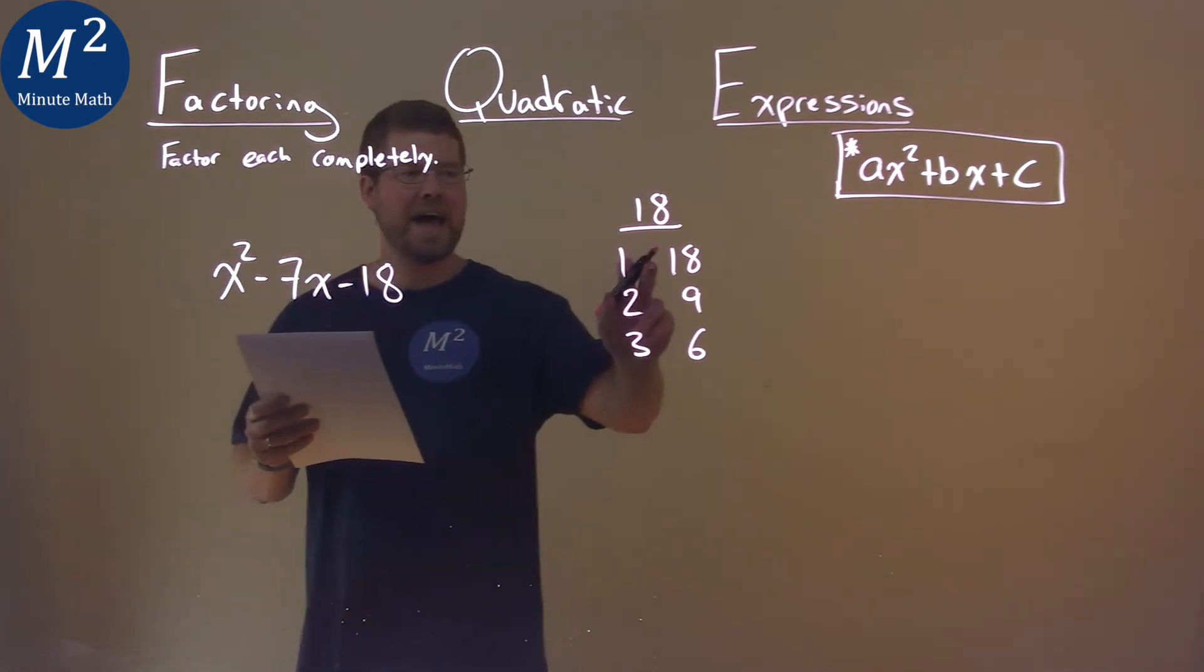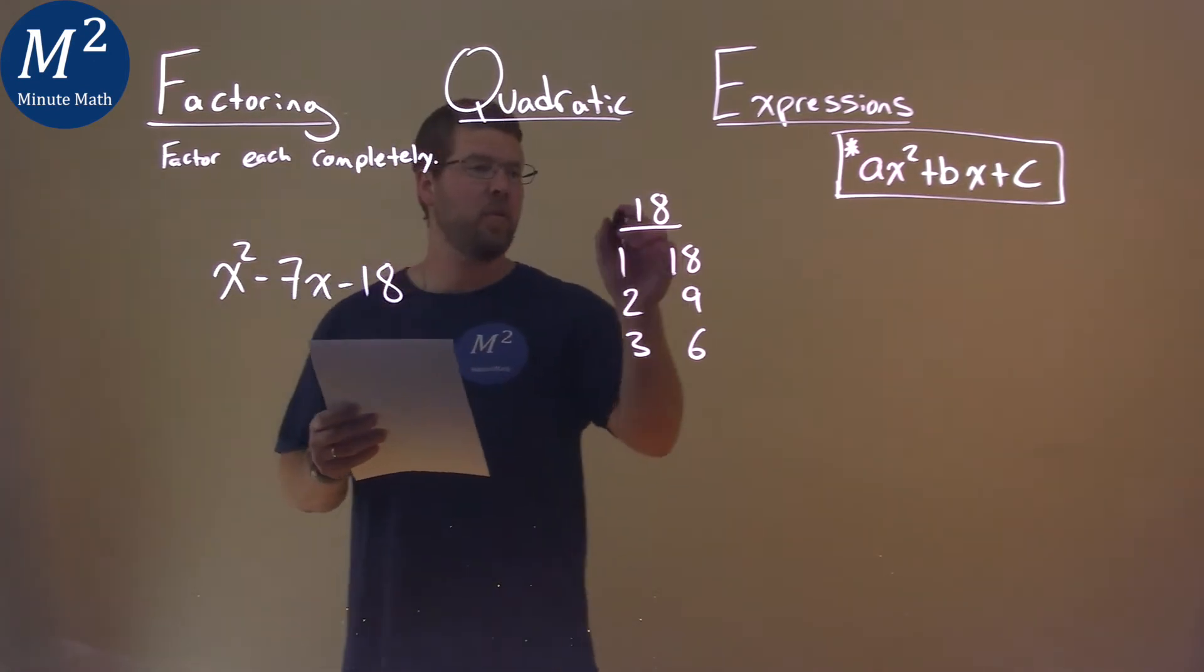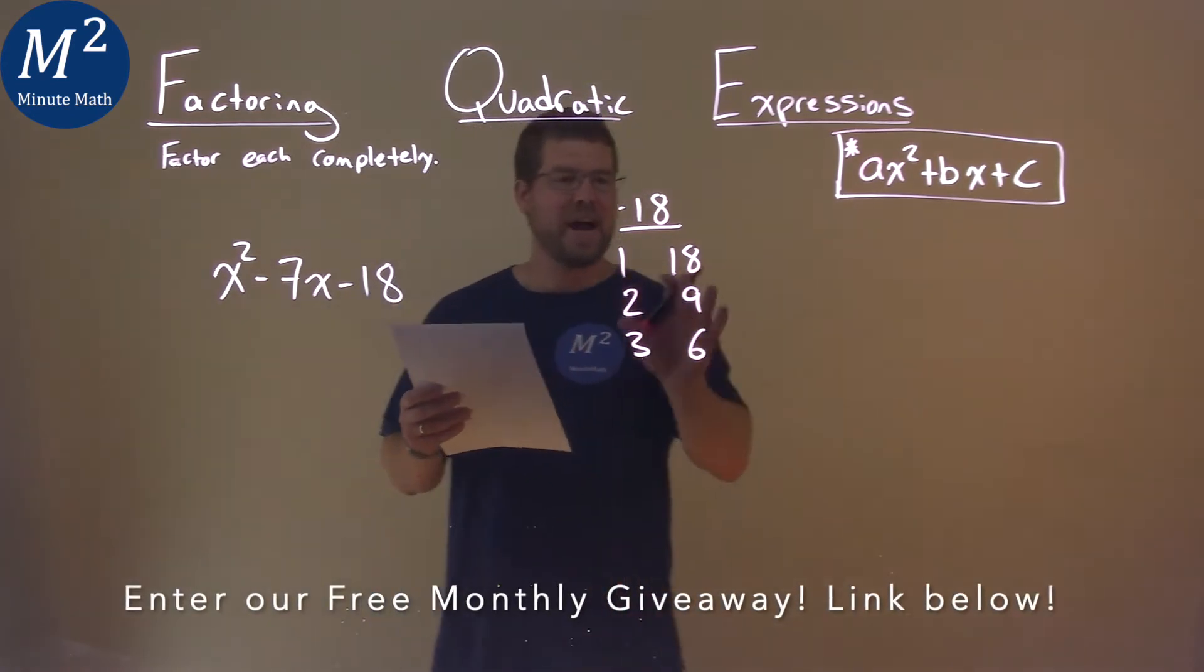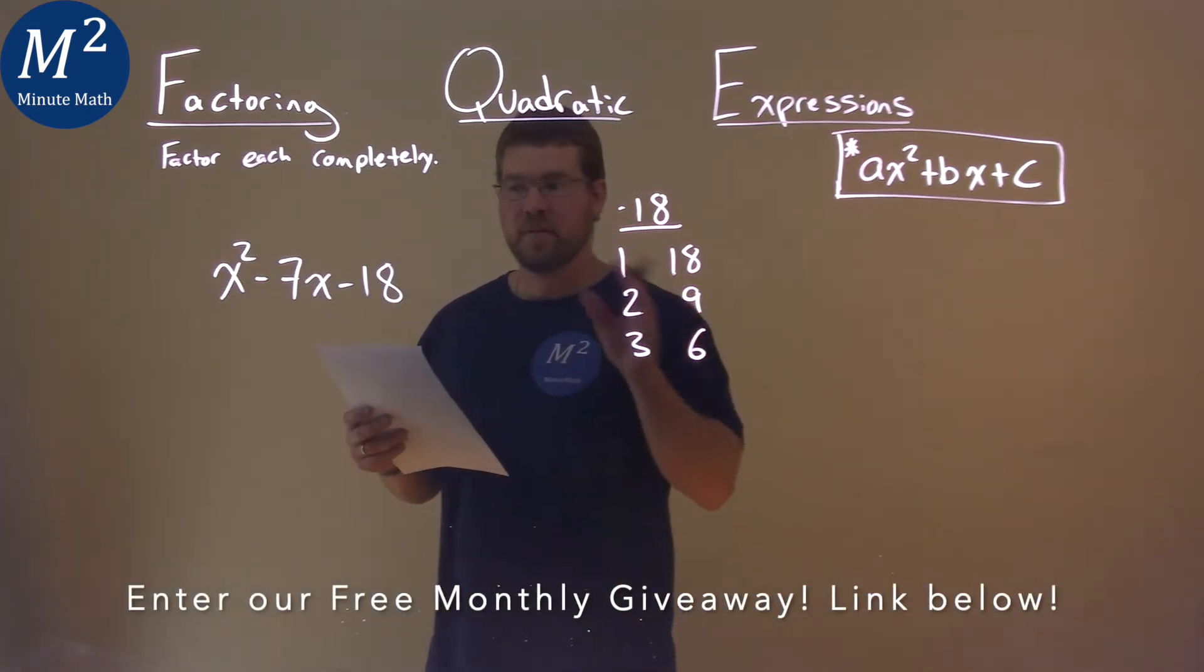So if one of them is negative, one of these is negative, which two combinations, when we add them, gives us a negative 7?